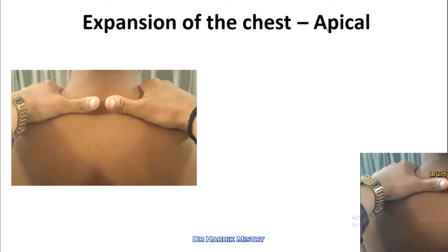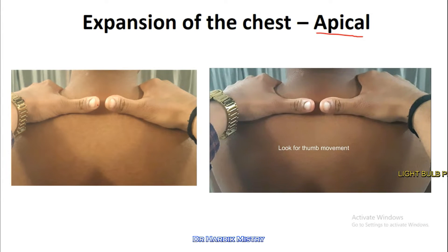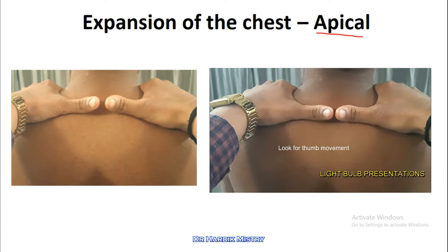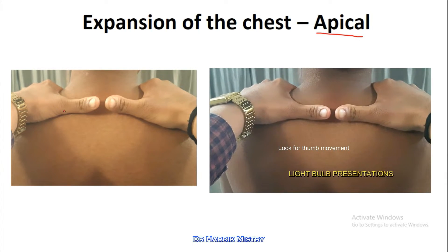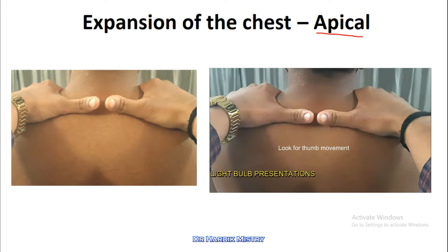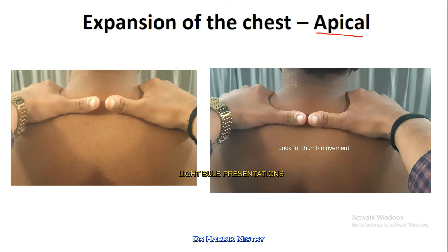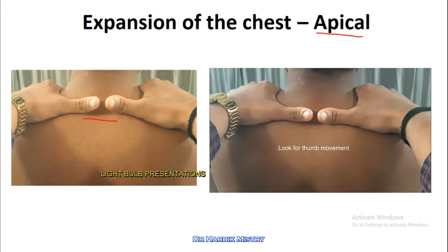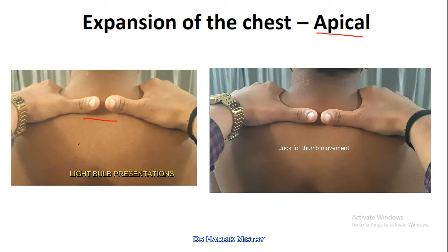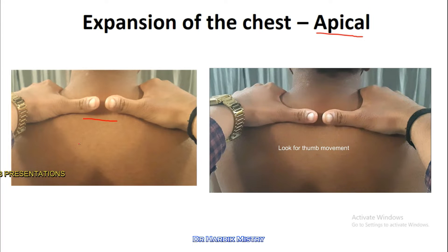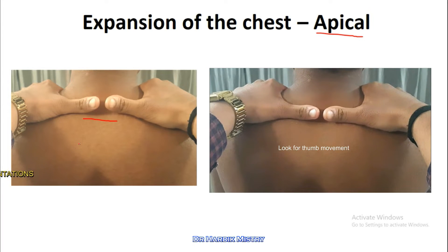Expansion of the chest — apical. You have to perform this expansion of the chest in a sitting position only. Tell the subject to sit, and put your hands over the shoulder part of the subject on the back side, as you are seeing in this photograph. Tell your patient or subject to take a deep inspiration and expiration, and observe whether the movement of both thumbs is the same on both sides.